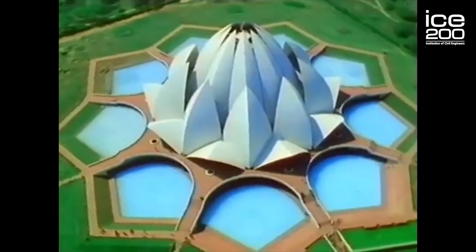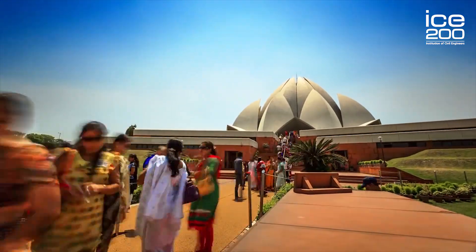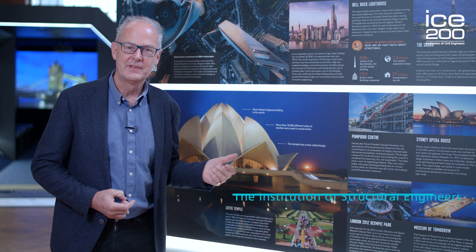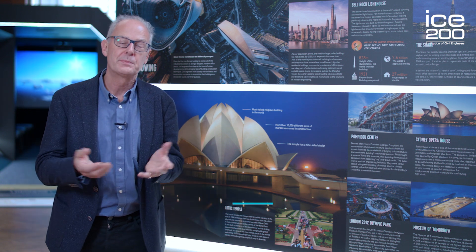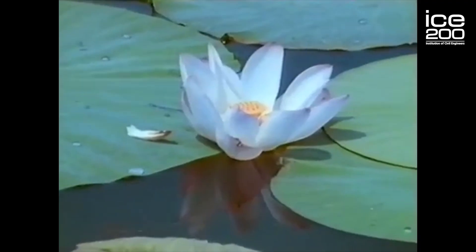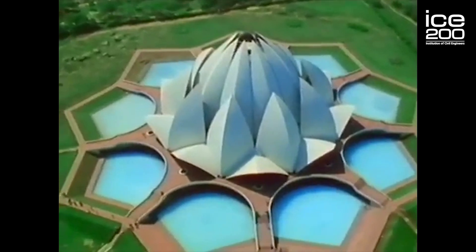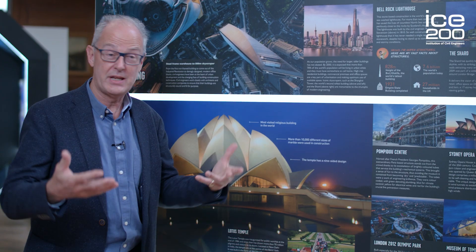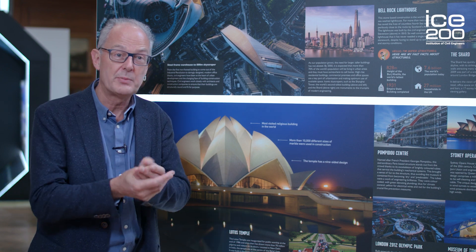This is the Lotus Temple in Delhi, India, and it's an absolutely amazing building. It looks like a lotus flower, which is why it's called the Lotus Temple. An architect came to see us with a cardboard model of a lotus flower floating in water and said this is going to be a temple in Delhi — a rather important kind of building, going to be there for a long time — and we want you, the engineers, to help us make it.